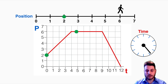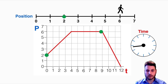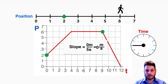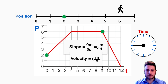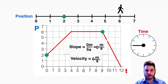In the next section there is just a flat line, so the position is not changing at all. That means the slope is 0 over 5, which is just 0 meters per second. The velocity is 0 — you can also see that they weren't moving in that period of time, they were just standing still.